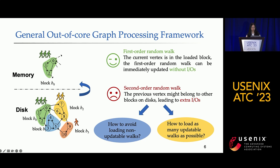Workers that reside on the block are loaded into memory and can be updated. For the first-order random walk, the current vertex and its neighbors are in the block, so it can be immediately updated without I/O. While second-order random walks consider the previous vertex in selecting the next stop, the previous vertex might belong to other blocks on disk, leading to extra I/O. So, to improve the second-order random walk efficiency, we need to consider the following two factors.